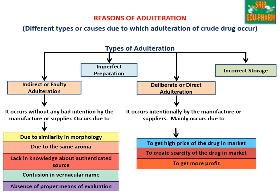Deliberate or direct adulteration is carried out to get a high price for the drug in the market, to create scarcity of the drug in the market, and to get more profit monetarily.